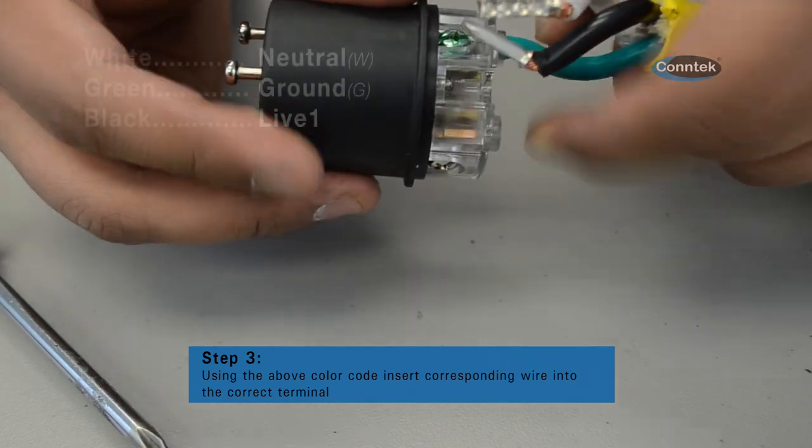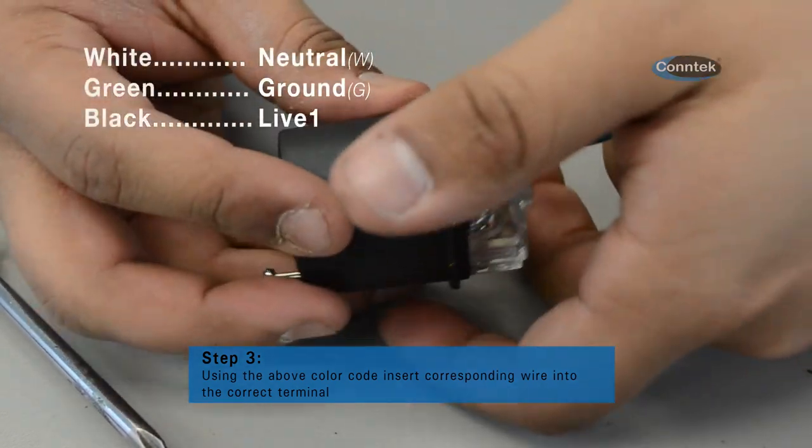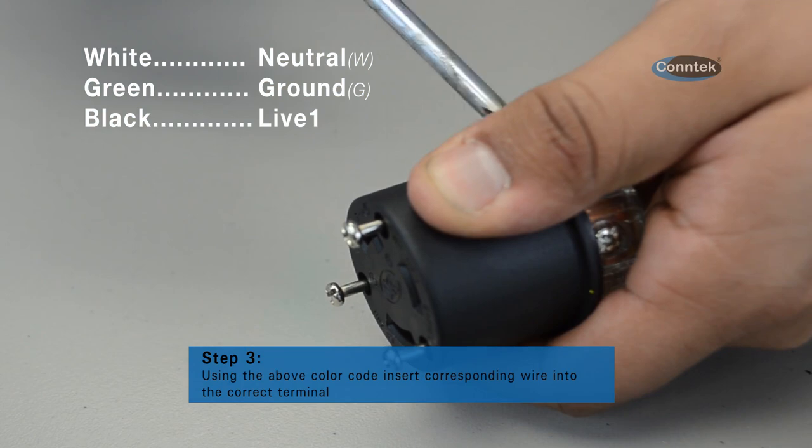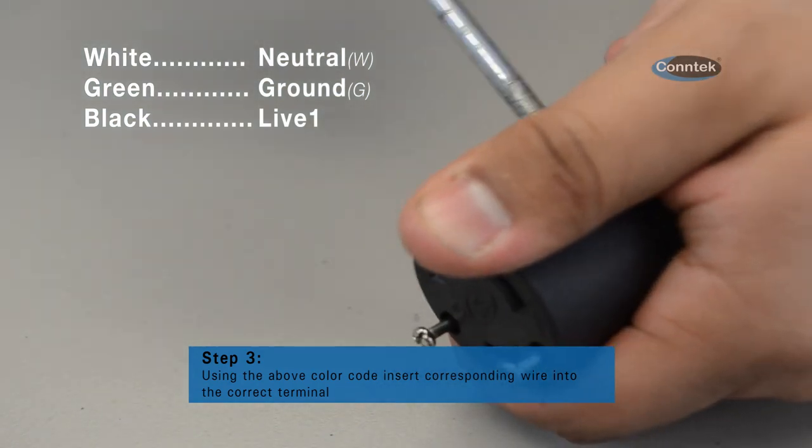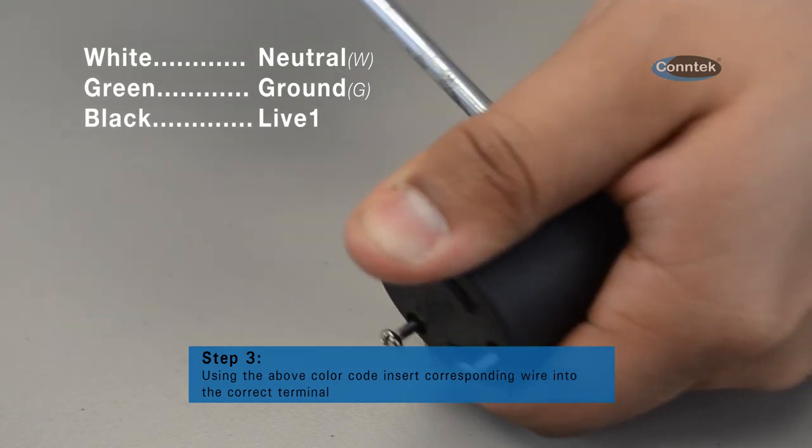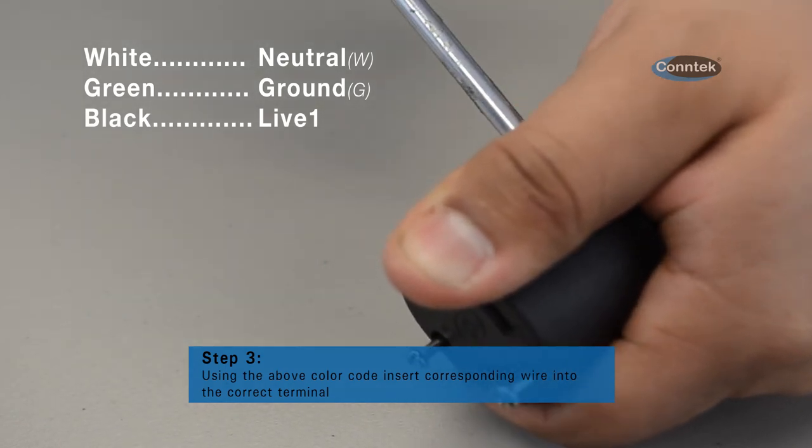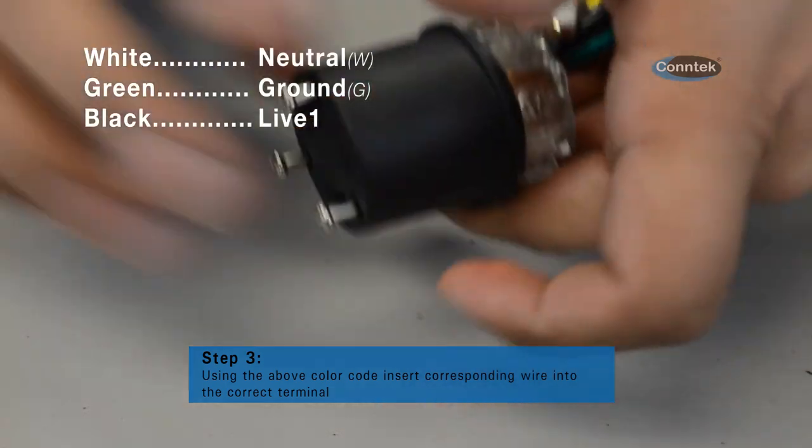The green wire is for the ground, white wire is for the neutral, and the black wire will be your live one wire. A live wire is the one that has the flow of electricity going through it, so be sure to pay close attention when wiring your devices as incorrectly wiring them can result in shorting out your electrical system.